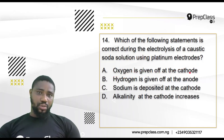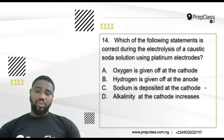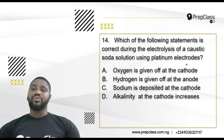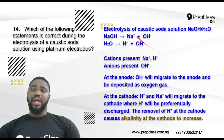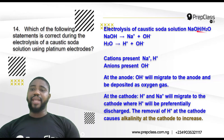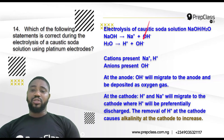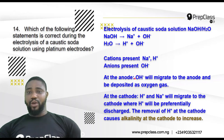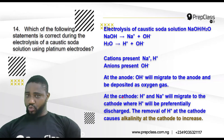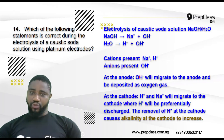Question 14: Which of the following statements is correct during electrolysis of a caustic soda solution using platinum electrodes? Options: A — oxygen is given off at the cathode; B — hydrogen is given off at the anode; C — sodium is deposited at the cathode; D — alkalinity at the cathode increases. Caustic soda is NaOH, which dissociates into sodium ions and hydroxide ions. Water dissociates into hydrogen ions and hydroxide ions.